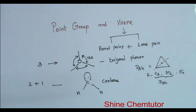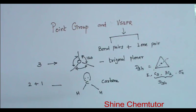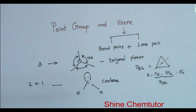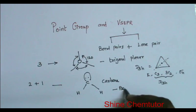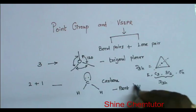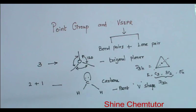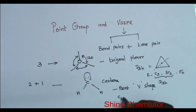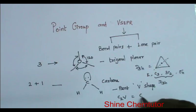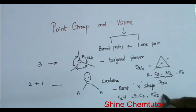For the bent shape, which is carbene with a V-shape — another very common example is water, which has the same structure with oxygen instead of carbon. The point group for this is C2V. The symmetry elements present are E, C2, sigma XZ, and sigma YZ — that is C2 plus 2 sigma V, giving C2V point group.